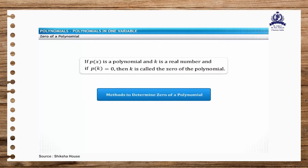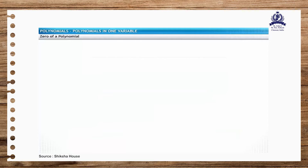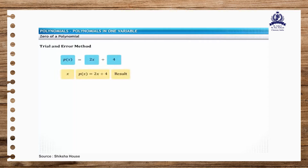You can determine the zero of a polynomial through two methods: by trial and error, and by equating the polynomial to 0. Consider a linear polynomial p of x equal to 2x plus 4. Using the trial and error method: let x equal to 1. Substituting 1 in the polynomial, you get 6, which is not equal to 0. If x is equal to minus 1, then the value of the polynomial is 2, which is also not equal to 0.